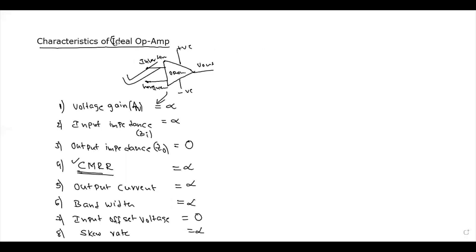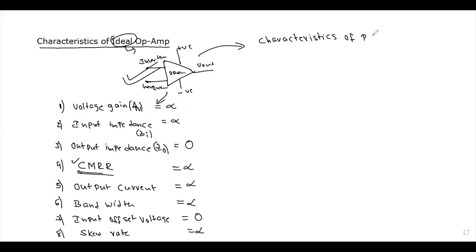So, if you are applying practical conditions, we need to define what is applicable. These are practical conditions — we will talk about these characteristics. This is ideal, and now we move to practical conditions to explain what the characteristics are and how the characteristics are. Characteristics of practical op-amp — practical operational amplifier — and then we will take the normal characteristics one by one.